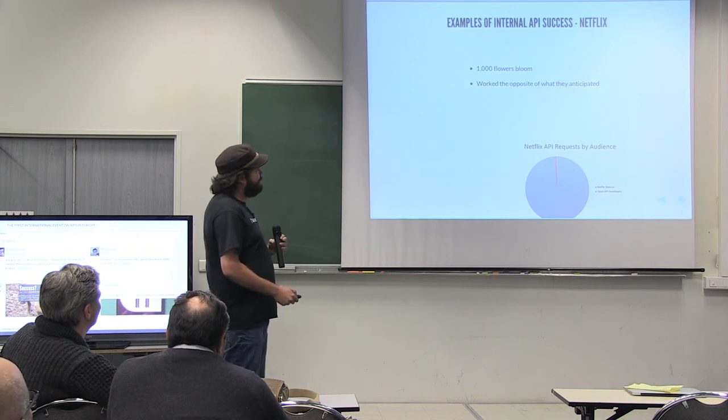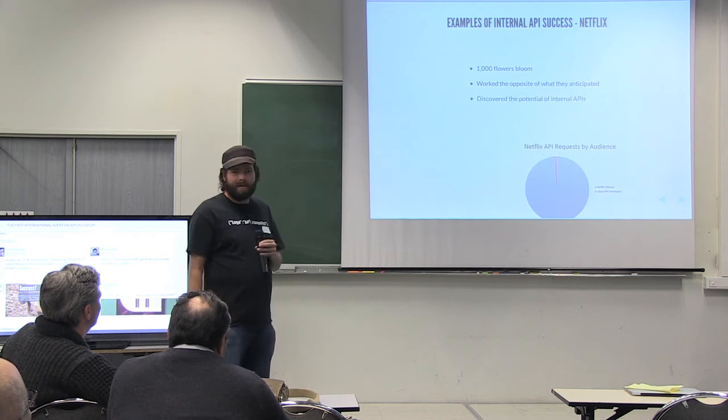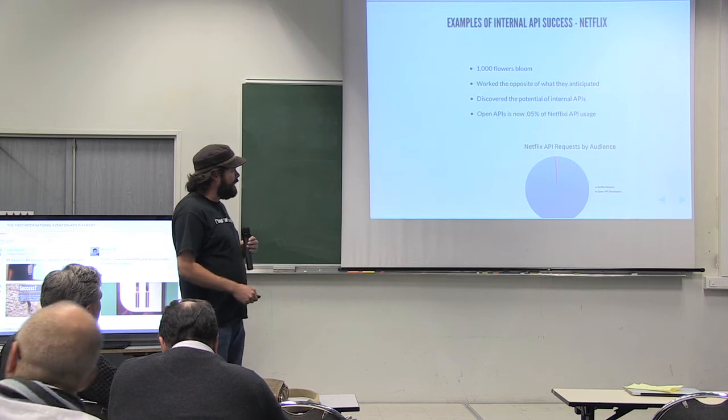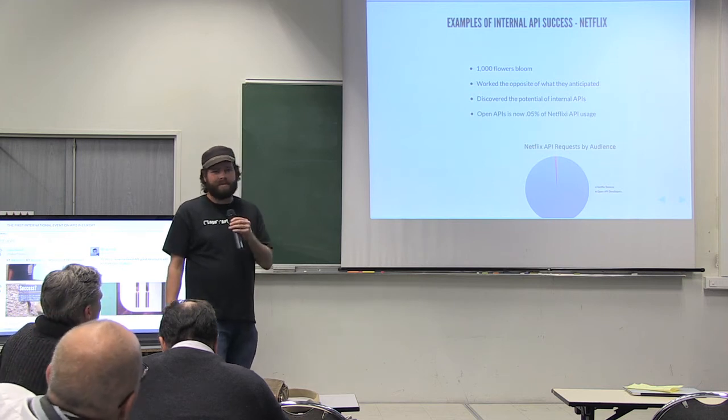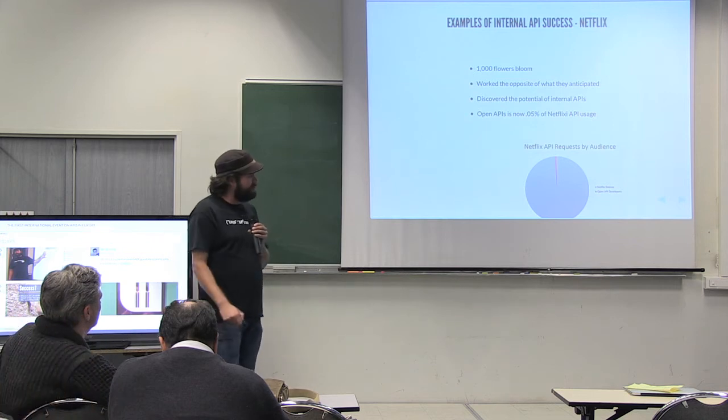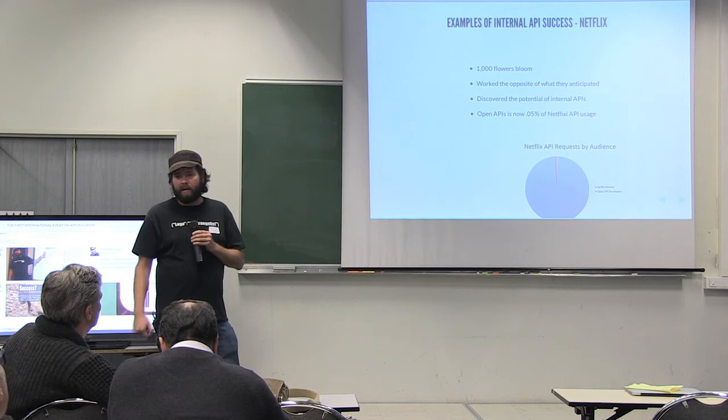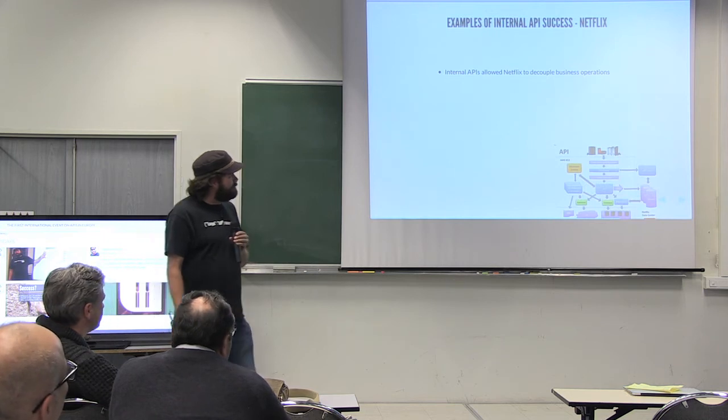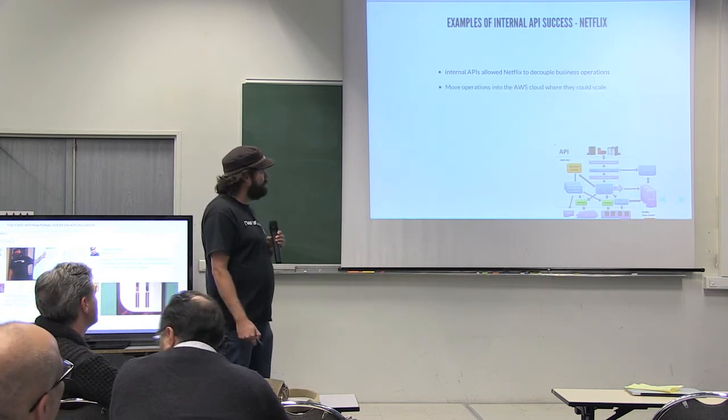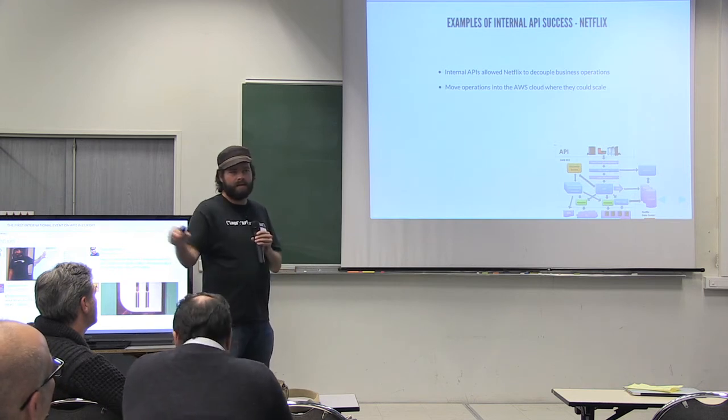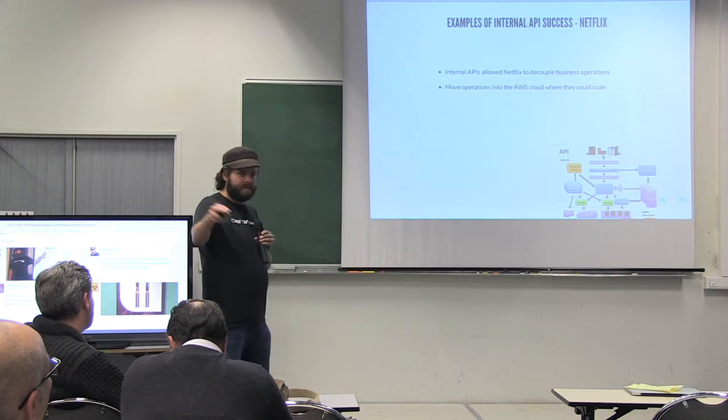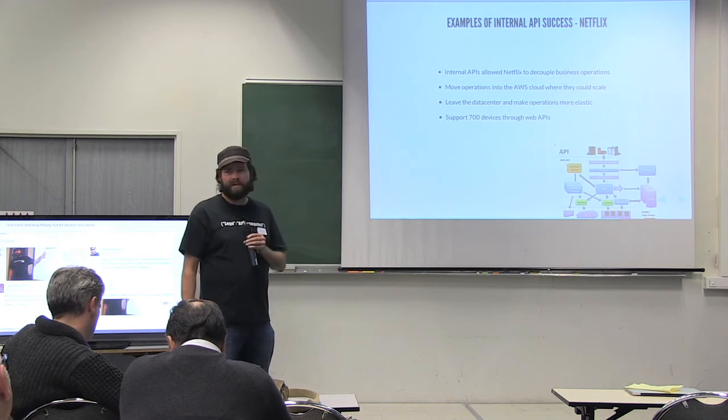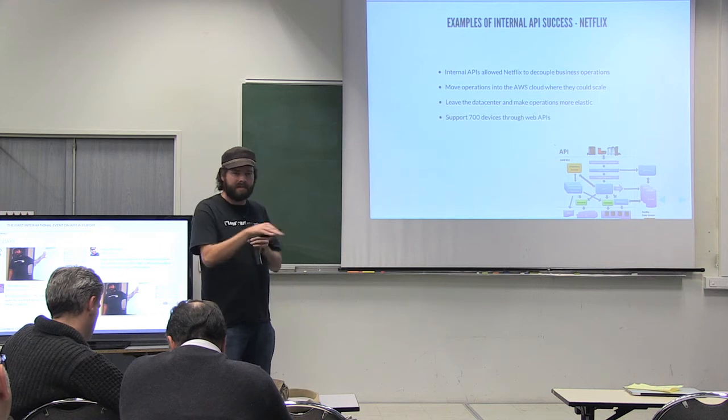It worked the opposite way, though. They discovered the potential of internal APIs. And decoupling their internal resources. And breaking them up into smaller chunks. Breaking up their teams. And now their open APIs is just .05% of their overall usage. Per the chart there. So all the rest of the APIs is actually used by their partners. All the devices that they serve. And it allowed them to decouple their business operations. Allowed them to move from their operations in the data center and move to the cloud. And scale piece by piece. Moving it from the data center into the cloud. And it allows them to support over 700 different devices now.